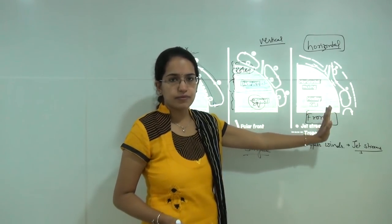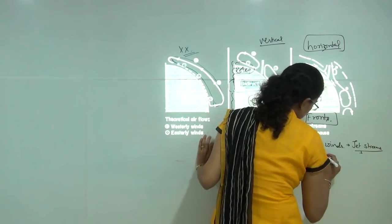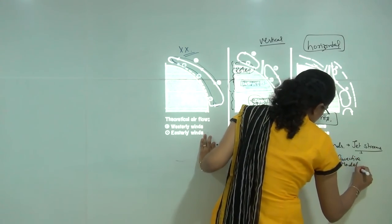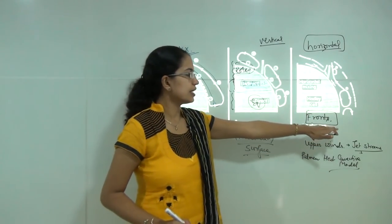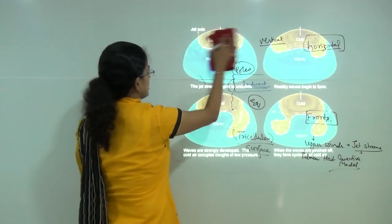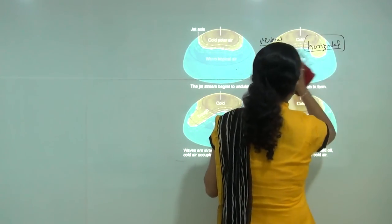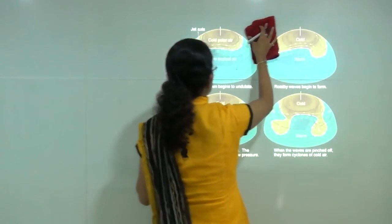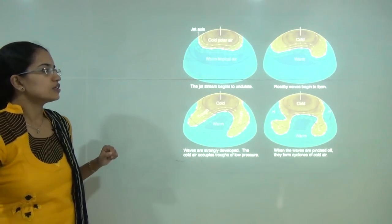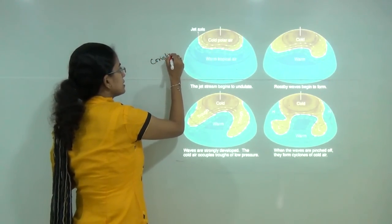This was the basic idea that Palmen laid down in his convective model, also known as the Palmen's heat convective model. He talked about upper air circulation and introduced the concept of jet streams. Jet streams are bands of winds that flow in the upper atmosphere or upper troposphere, more or less parallel in nature. Rossby waves are found due to potential vorticity and the impact of the Coriolis force and the pressure gradient.